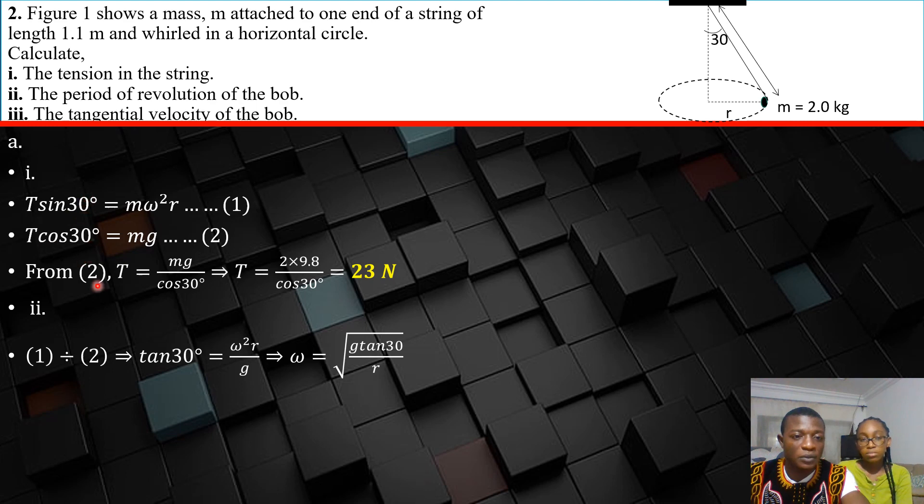So T sin 30 over T cos 30 gives us tan 30. m cancels with m, and we have omega squared r over g. So we make omega the subject and it's the square root of g tan 30 over r.